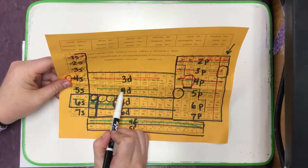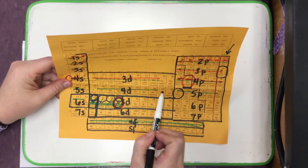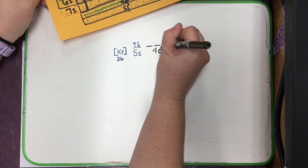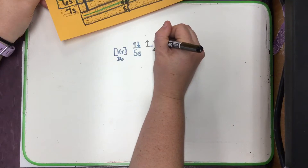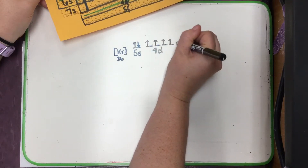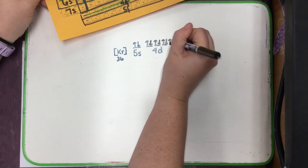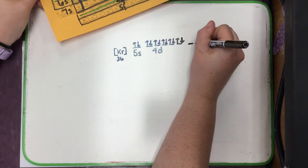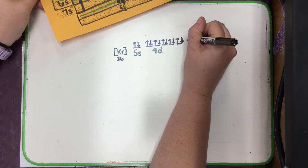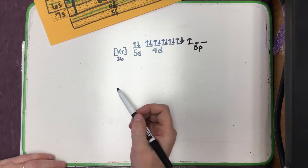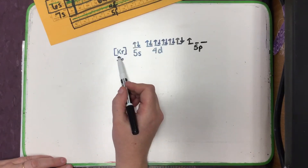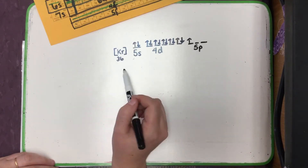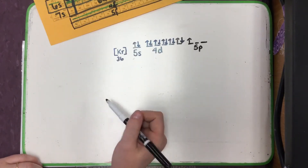Then 39 through 48 are all here in the 4D room. And finally, number 49 is in 5P. This would be considered the shorthand orbital notation because it started with the noble gas — we didn't start all the way at 1S, but picked up after a noble gas. That's shorthand, and it's orbital notation because it used the arrows and the lines.